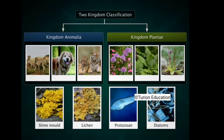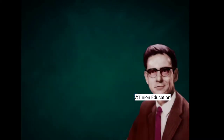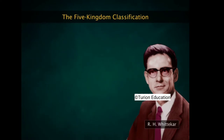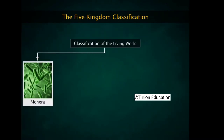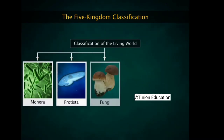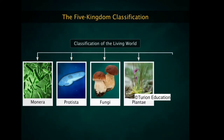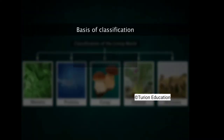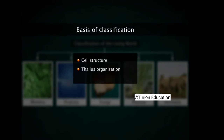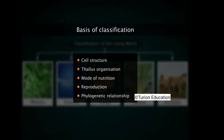Such shortcomings of the two-kingdom classification were overcome when scientist R.H. Whittaker published the five-kingdom classification in 1969. The living world was divided into five kingdoms: Monera, Protista, Fungi, Plantae, and Animalia. The criteria used by Whittaker for classification were cell structure, thallus organization, mode of nutrition, reproduction, and phylogenetic relationship.